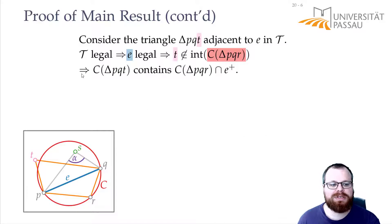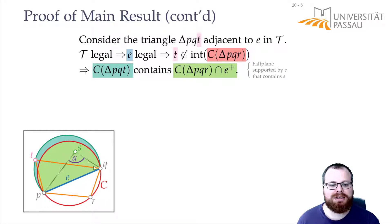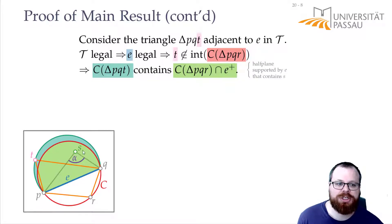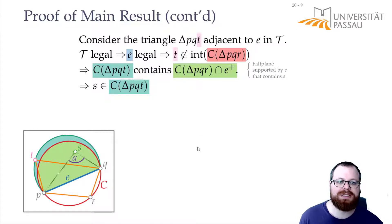Now I want to look at the circumcircle of triangle PQT. This contains the green part — that is the part of the circle C (the red one) that lies above edge E. So the cyan circular segment contains the green circular segment. We chose S such that it lies in the red circle; in particular it lies in the green circular segment. So that means it also lies in the cyan circular segment.